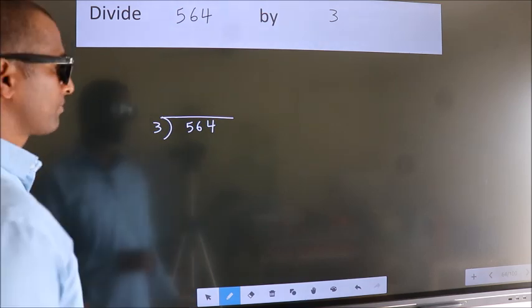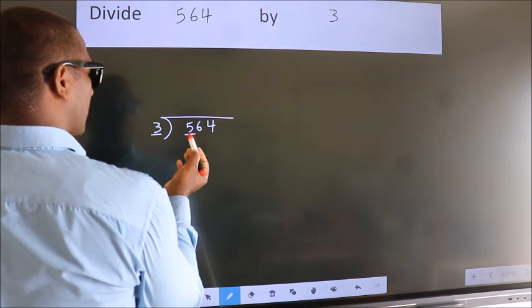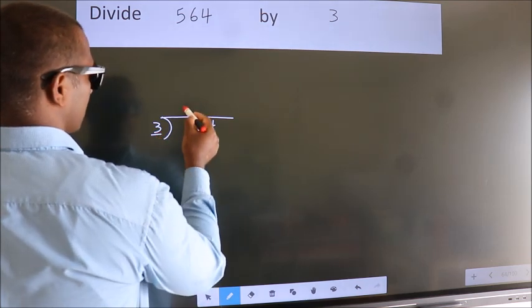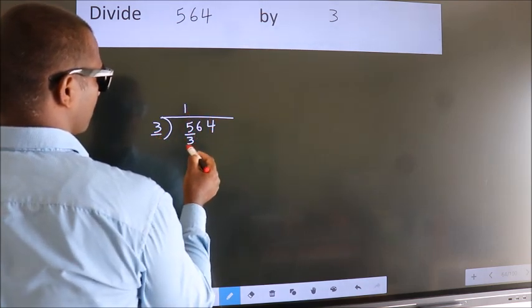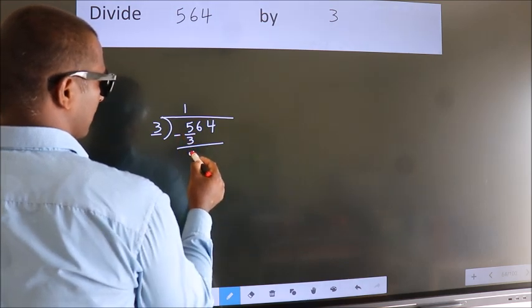Next, here we have 5, here 3. A number close to 5 in 3 table is 3 1s 3. Now, we should subtract. We get 2.